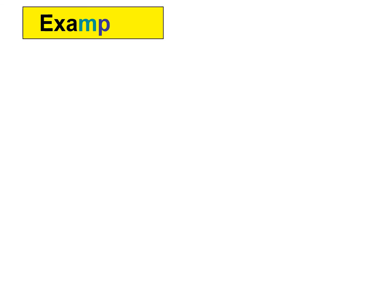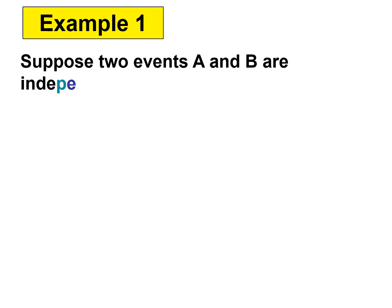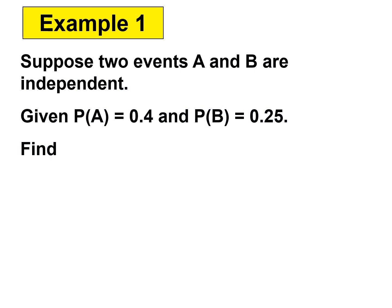Example 1: Suppose two events A and B are independent. For this question, it's mentioned that A and B are independent. Given P(A) = 0.4 and P(B) = 0.25, find (a) P(A∩B) and (b) P(A∪B).